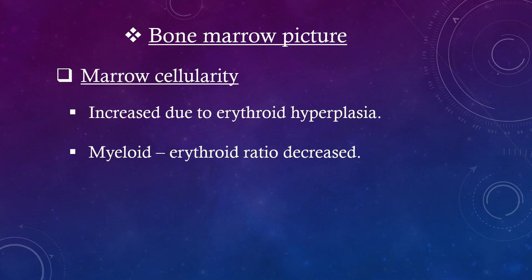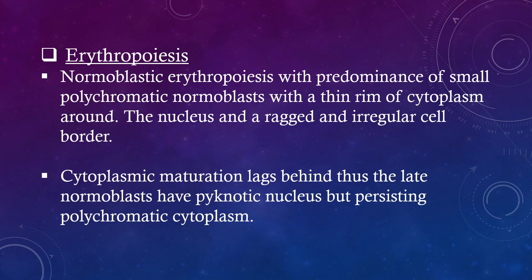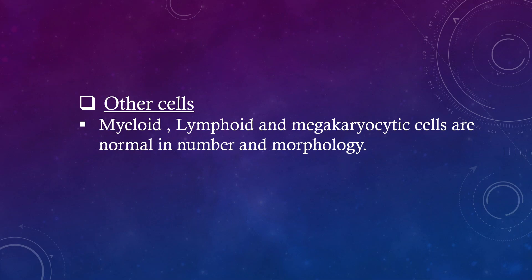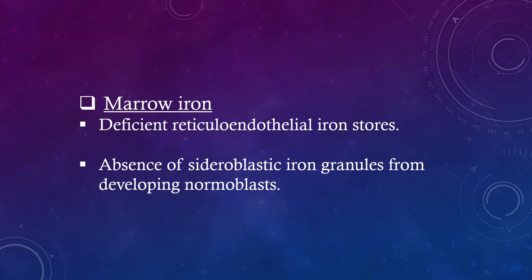Bone marrow picture: Marrow cellularity is increased due to erythroid hyperplasia. Myeloid-to-erythroid ratio is decreased. Erythropoiesis is normoblastic with predominance of small polychromatic normoblasts with a thin rim of cytoplasm around the nucleus and a ragged and irregular cell border. Cytoplasmic maturation lags behind; the late normoblasts have a pyknotic nucleus but persisting polychromatic cytoplasm. Myeloid, lymphoid and megakaryocytic cells are normal in number and morphology. Marrow iron shows deficient reticuloendothelial iron stores and absence of sideroblastic iron granules from developing normoblasts.